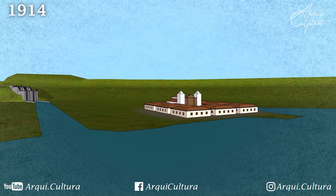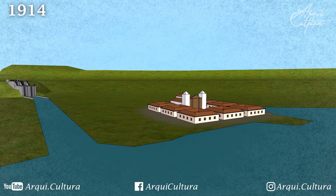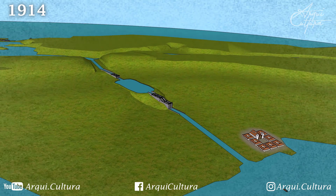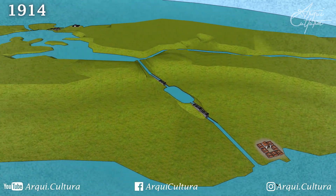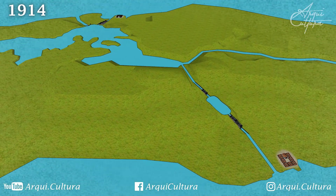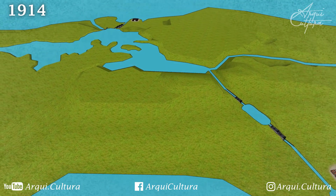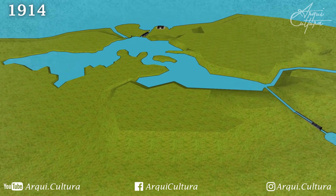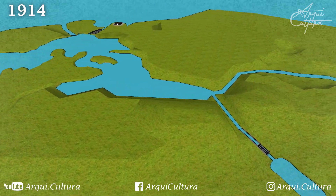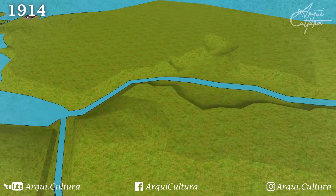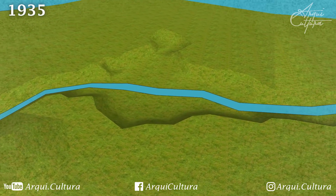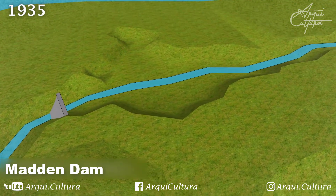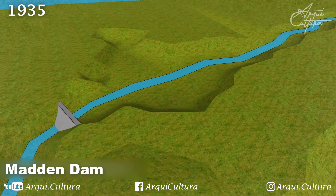In 1914, the Panama Canal was successfully inaugurated, putting Panama at the center of the world. According to the agreements, the canal, the lake, and an 8-kilometer strip on each side of the canal would be under US sovereignty, naturally excluding the cities of Colón and Panama. Since the canal depends heavily on the lake's water level, there had to be a plan B. So in 1935, the Madden Dam was built on the Chagres River, creating another artificial lake as a backup for Gatun Lake.